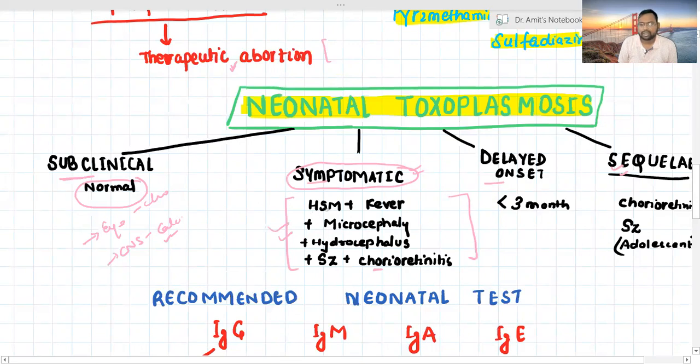Without investigation, toxoplasmosis has a triad. We have 3C. First C is cephaly, it has hydrocephalus. Second C, we have chorioretinitis. And lastly, we have calcification, intracranial calcification. These are 3C triad of toxoplasmosis. It may present as a delayed onset, but present within 3 months with similar presentation, and may present as sequelae for chorioretinitis or seizure in adolescence group.